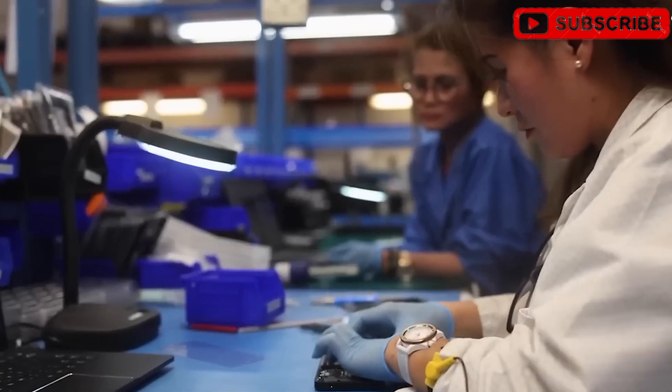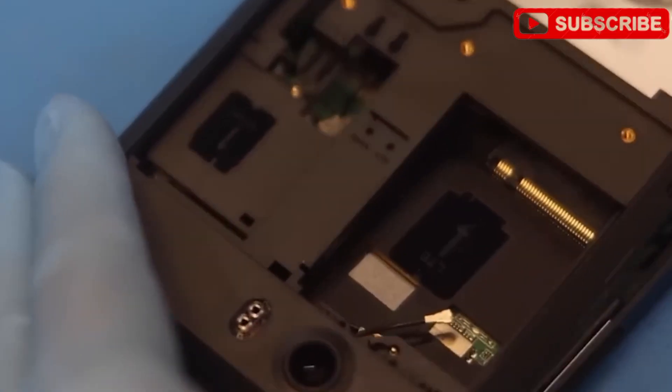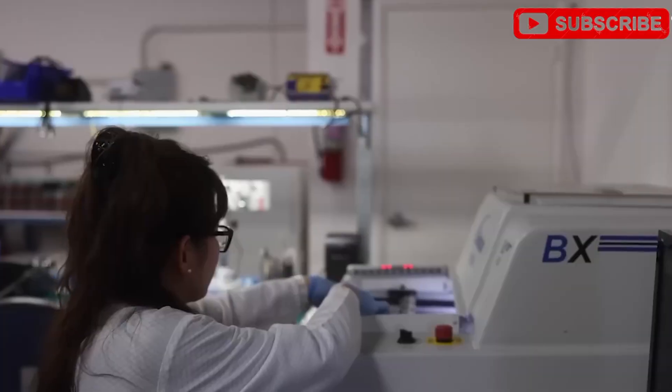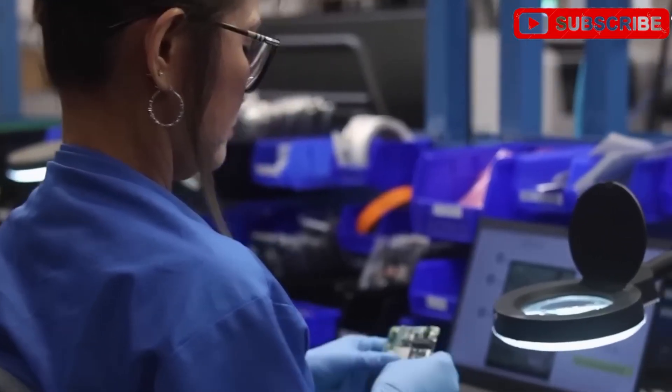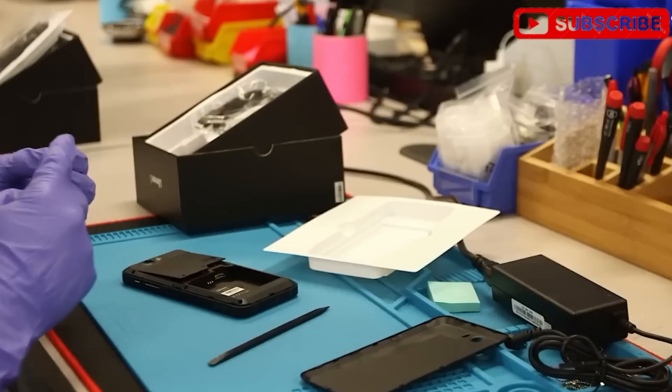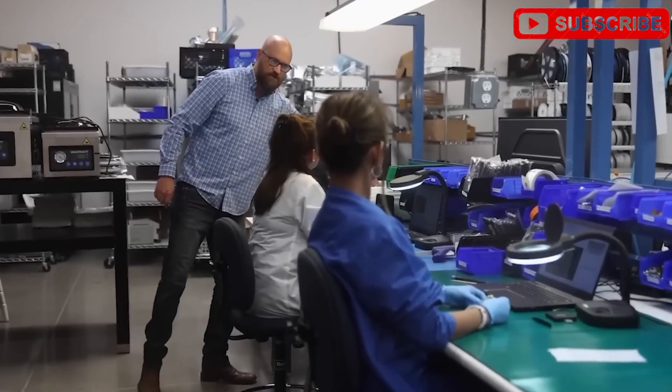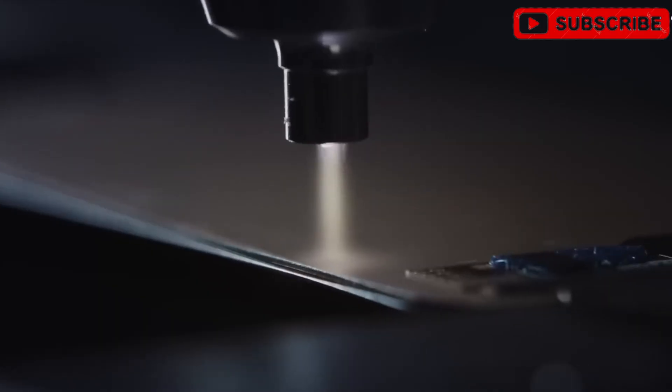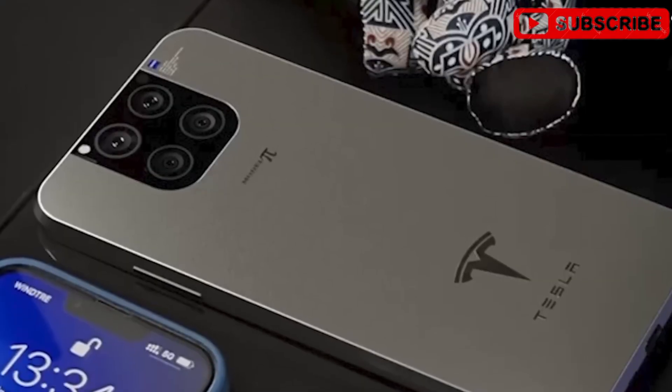So, what makes the Tesla Pi phone stand out? First, its design is a masterclass in balancing form and function. Measuring 5.73 inches tall, 2.76 inches wide, and a slim 0.28 inches thick, it weighs just 6.09 ounces. Compare that to the iPhone 17 Air: 6.42 inches tall, 3.06 inches wide, 0.22 inches thick, and 5.15 ounces. The Tesla Pi phone is slightly thicker, but uses that space wisely, avoiding the battery compromises Apple made for thinness.